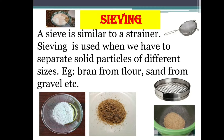Bran is the husk — the brown outer covering of the grains, like in rice. That part is left when the grain is made into flour, so your mother sieves it to get the flour and bran separately. Another example is sand from gravel — during construction, gravel contains small stones, and sieving is used to get fine sand.